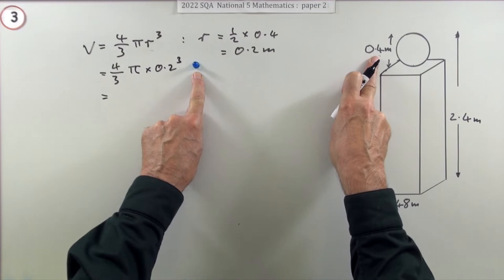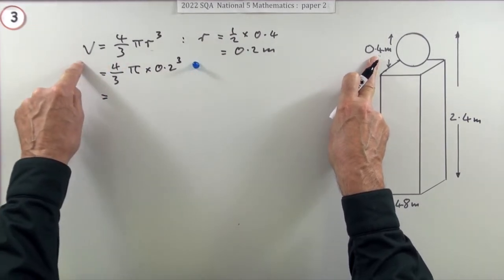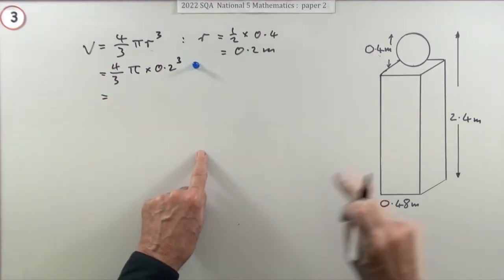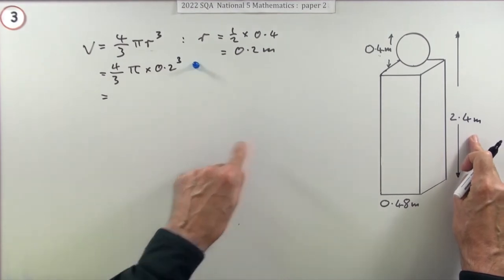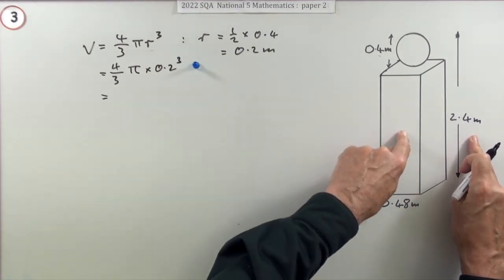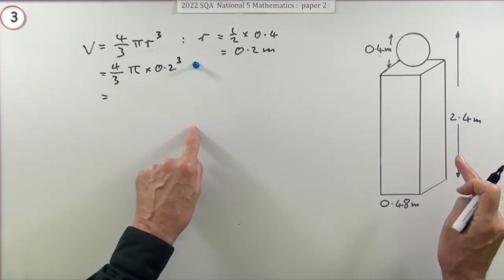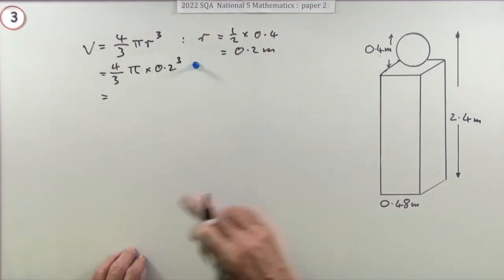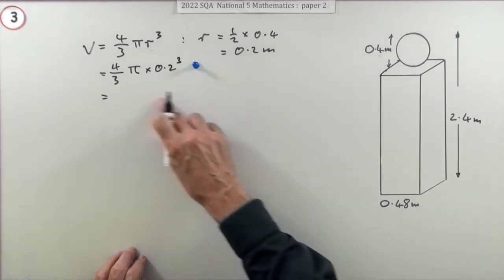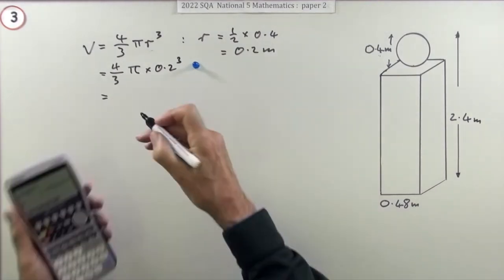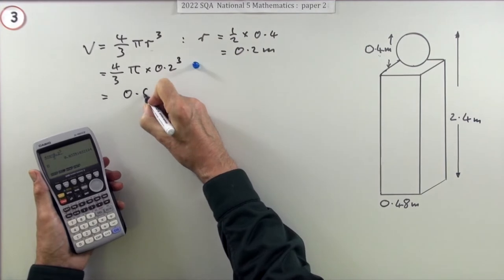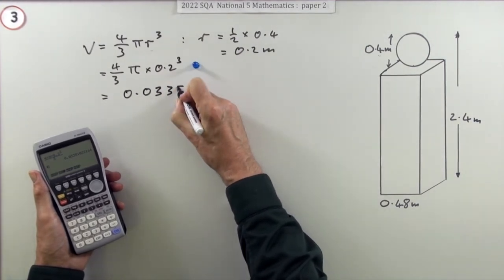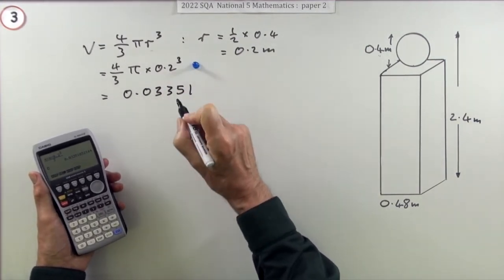Putting 0.2 into the formula for the volume of a sphere gets the first mark. There's no mark for this specific answer because there's only three marks altogether. Press the buttons and you get 0.033, put down as much as you like just don't put down too little.